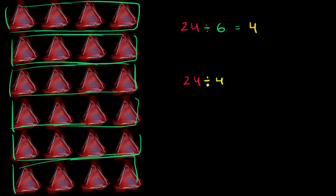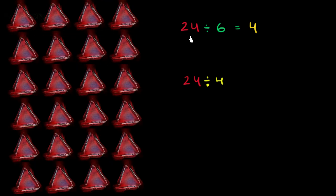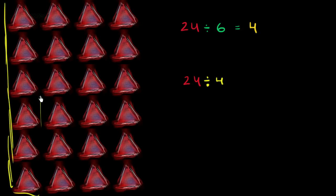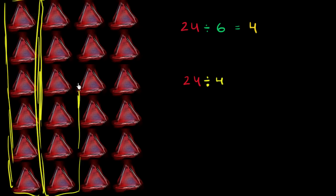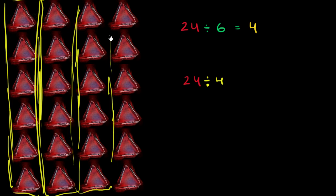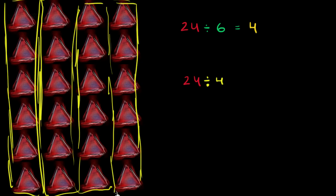Another way we could have thought about that is we could have said let me divide 24 into groups of 6. So that's one group of 6, that's one group of 6 right there, that's another group of 6, and that's another group of 6. How many groups of 6 do we have? We have 4 — we have 4 groups of 6.